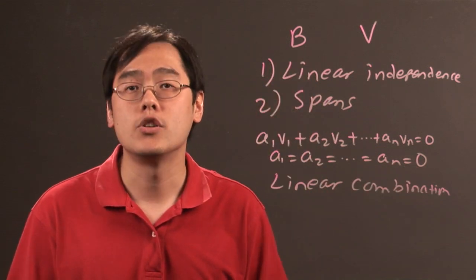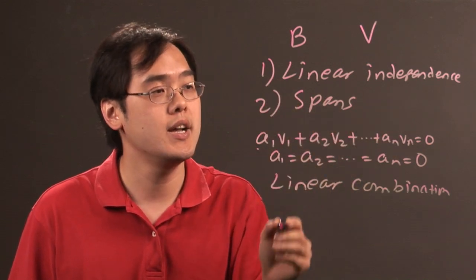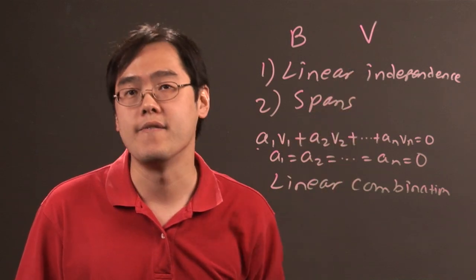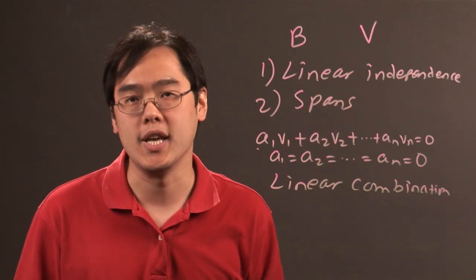So, to show that something is a basis in a vector space, you have to show linear independence, which is this criterion, and show that the basis spans V—that every element in V is a linear combination of all the elements in B.